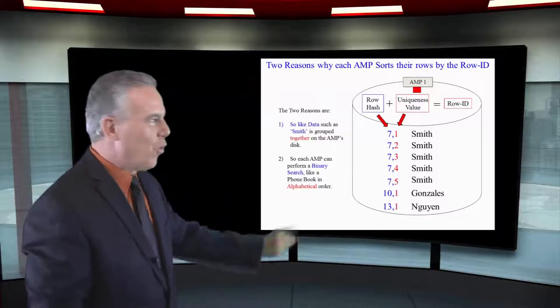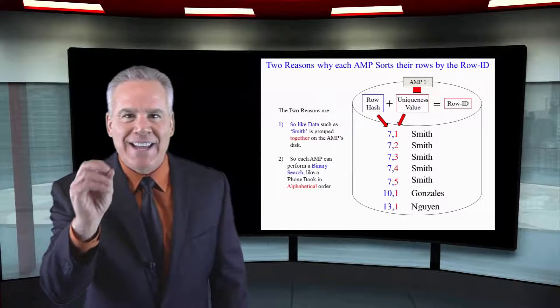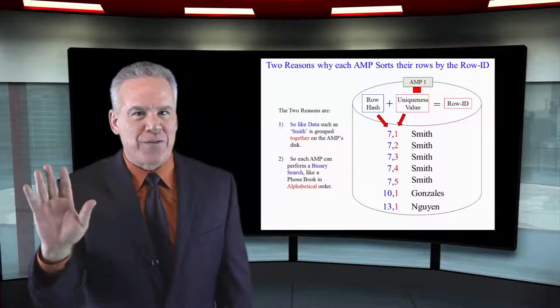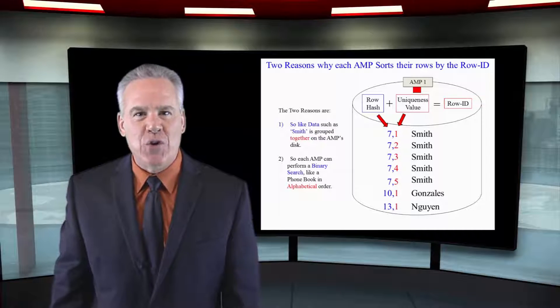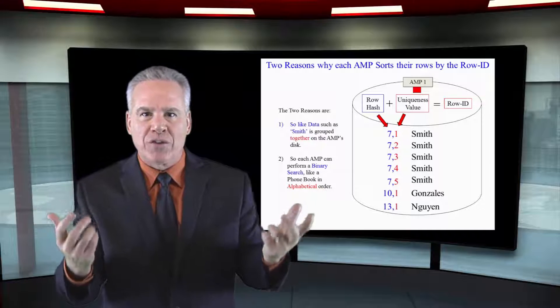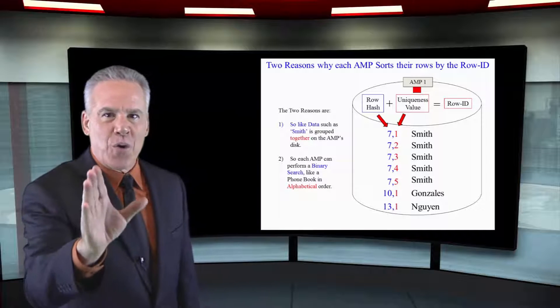When you sort by the row ID, like data is grouped together in a single block almost every single time, and this is a huge advantage when you're looking at large amounts of data. That's how it works.